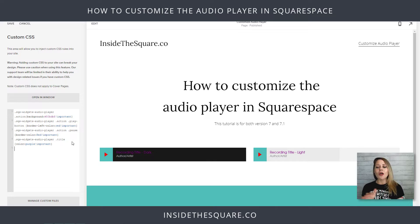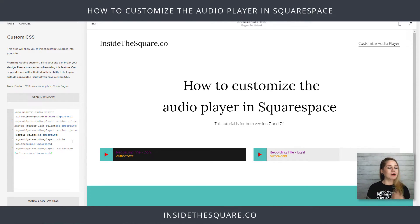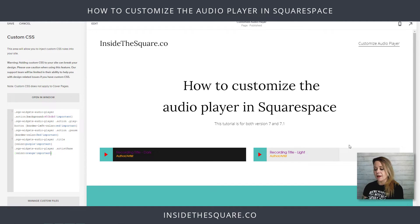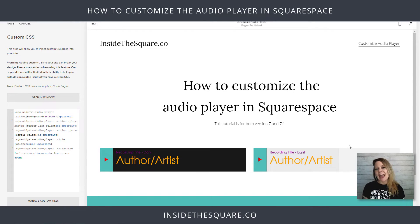We've got one more thing to change — that's the author/artist name at the bottom. We're going to say SQS widgets audio player dot artistName — capital N — and here we can say "color: orange !important." Watch out for spelling — "player" needs a Y. Once corrected it shows up perfectly. You can also change the font size in that same line — for example "0.5rem" makes it super tiny, or "3rem" makes it gigantic. You can make any type of font or character changes inside that line of code.